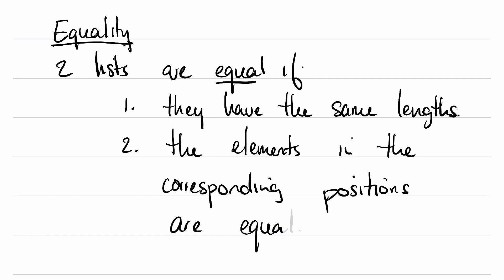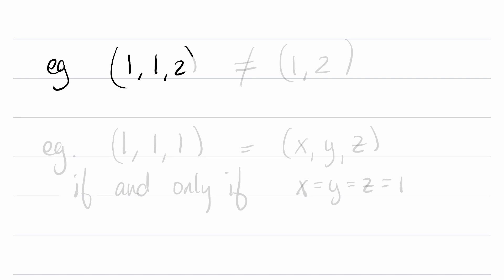They have to be exactly the same. So for example, (1, 1, 2) is not equal to (1, 2). First of all, they have different lengths: the first of length 3, the second of length 2. And second of all, they actually have different elements: 1, then 1, then 2 versus 1, then 2.